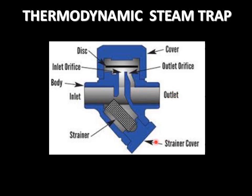Now let us consider the steam condensate enters through this port. Passing through the strainer, it enters the inlet orifice. When there is sufficient condensate, it exerts some pressure on the disk and lifts it up. When this disk is lifted, the condensate from this inlet orifice moves to the outer orifice and then exits through the outlet port.